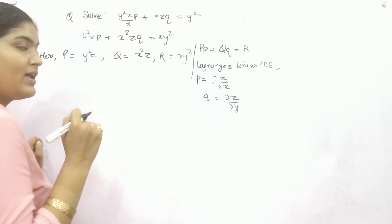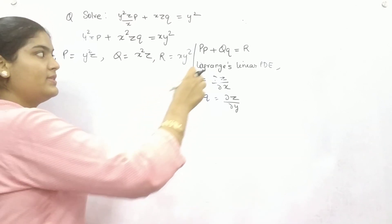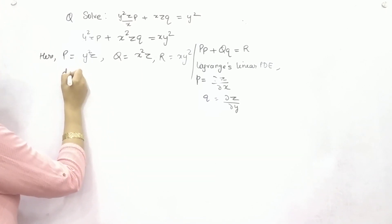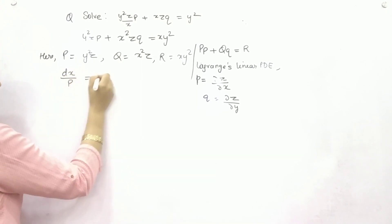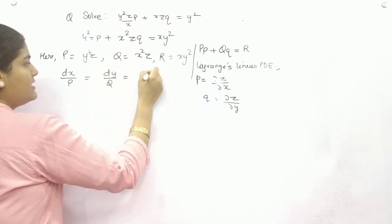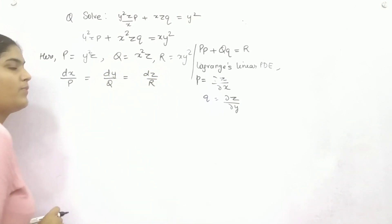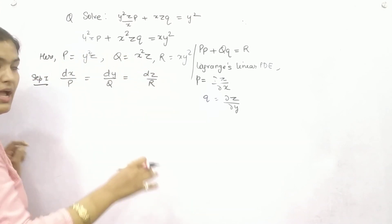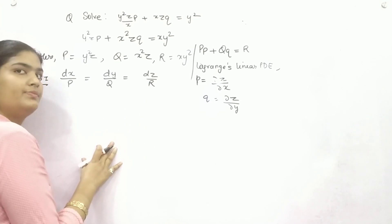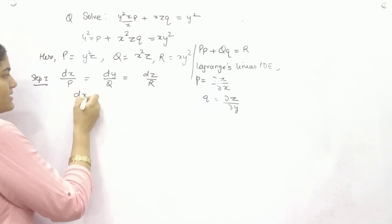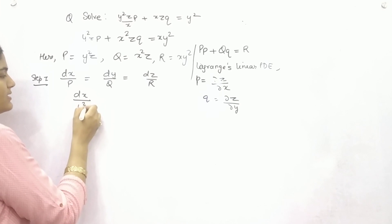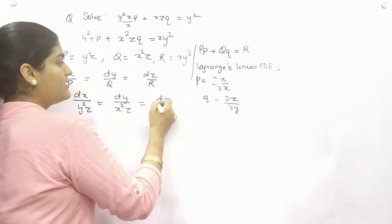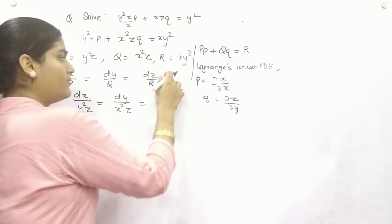There are three steps to solve these types of equations. Step 1: find dx/P = dy/Q = dz/R. Put in the values: P is y²z, Q is x²z, and R is xy². So you get dx/(y²z) = dy/(x²z) = dz/(xy²).